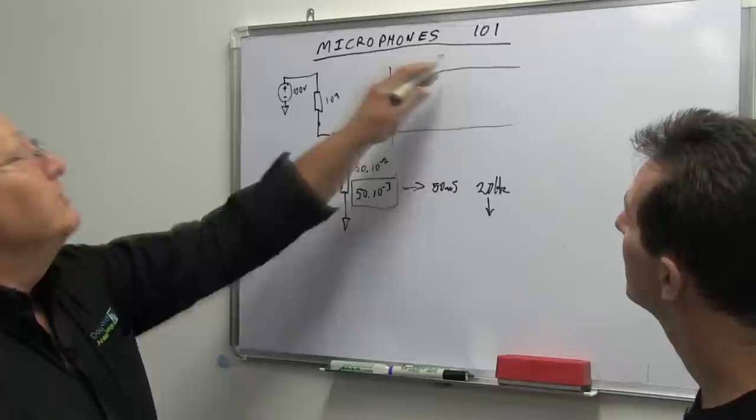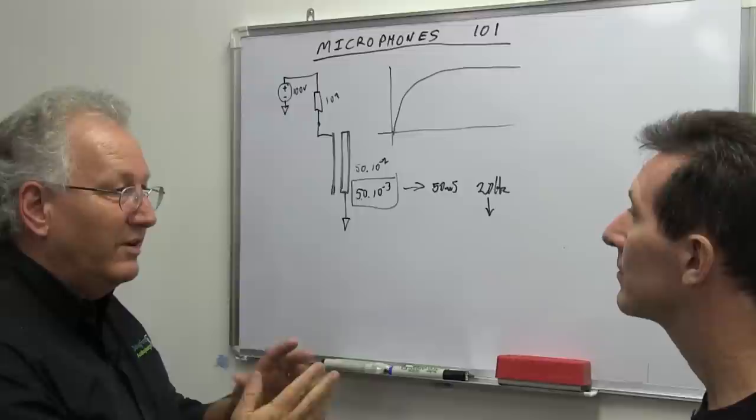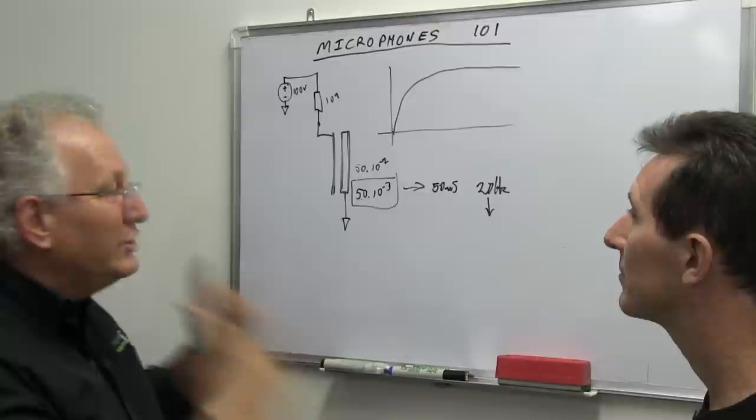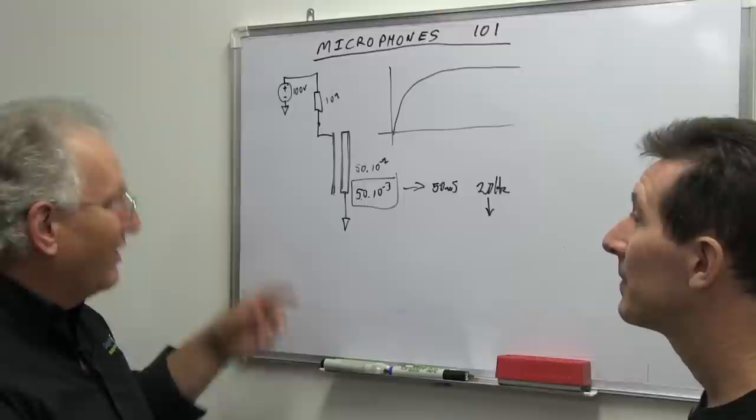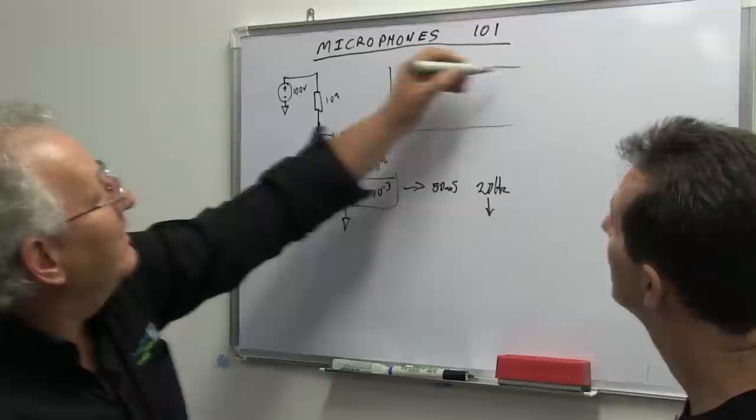Fairly typical. Anyway, charge is up. We've got a charge there. What happens when we come along with a pressure wave onto that diaphragm? It decreases the distance between the plates, increases the capacitance. Now, the thing is, charge on that capacitor has to be preserved. There's nowhere for the charge to go in a hurry. Charge is preserved. If we've increased the capacitance, the voltage has to fall to keep the same energy. And indeed, that's exactly what happens.